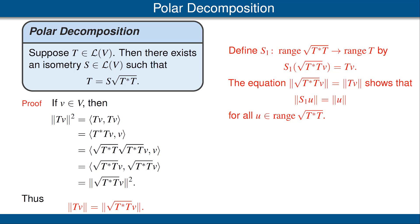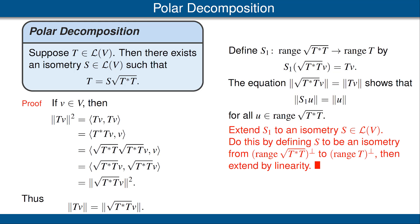However, it's not always the case that the range of the square root of T star T is the whole vector space V. So here's what we do when that doesn't happen: we extend S1 to an isometry — called S — on all of V. We do this by noting that the range of the square root of T star T and the range of T have the same dimensions, thus the orthogonal complements have the same dimensions, and thus there's an isometry from the orthogonal complement of the range of the square root of T star T to the orthogonal complement of the range of T. Then we extend by linearity. This is too vague for a video — the details are spelled out carefully in the book. Please be sure to read the entire proof in the book, because here we have only given an outline of the main ideas.